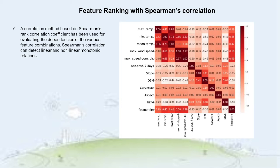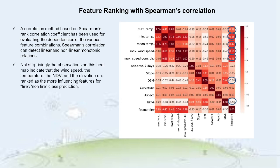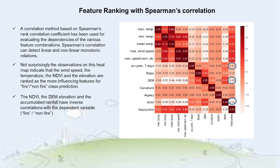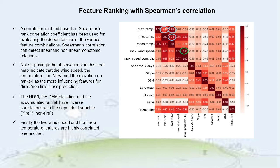After having extracted the features, we performed feature ranking techniques to determine feature importance. A correlation method based on Spearman's rank correlation coefficient was used first for evaluating the dependencies of the various feature combinations. Spearman's correlation can detect linear and non-linear monotonic relations. The results indicate that wind speed, temperature, NDVI and DEM elevation are ranked as the most influential features for fire/no-fire class prediction. The NDVI, the DEM elevation and the accumulated rainfall have inverse correlations with the fire/no-fire independent variable. The two wind speed and three temperature features are highly correlated to one another.